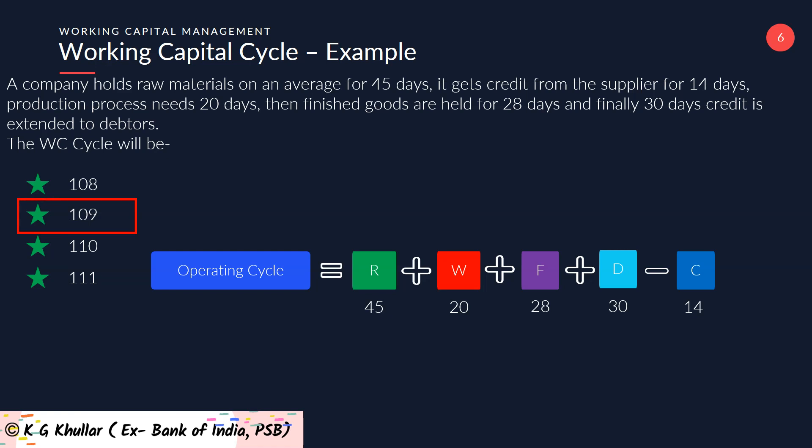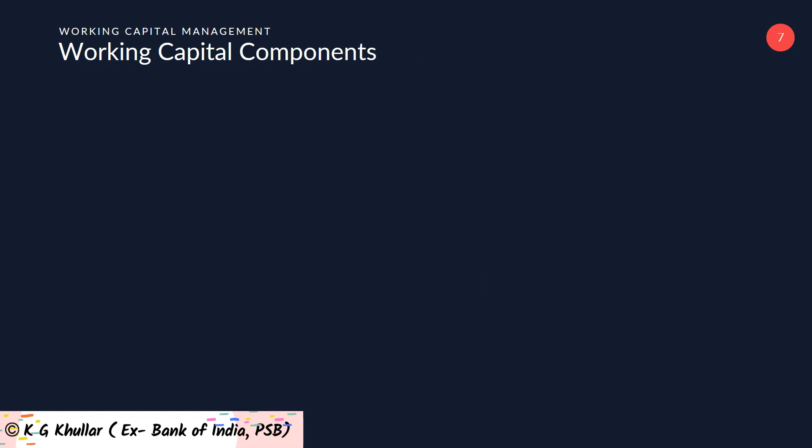The correct answer to this question is option B. For JIB examination, it is enough to know the calculation of the working capital cycle up to here. But for CIB and CCP — that is Certified Credit Professionals — you may be asked about the calculation of the different components of this working capital cycle also, so I am summarizing this with the help of a table.